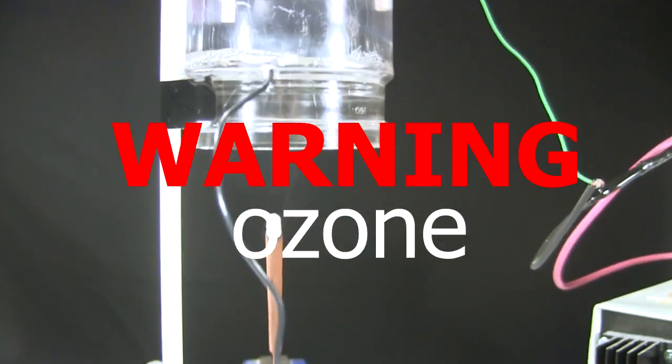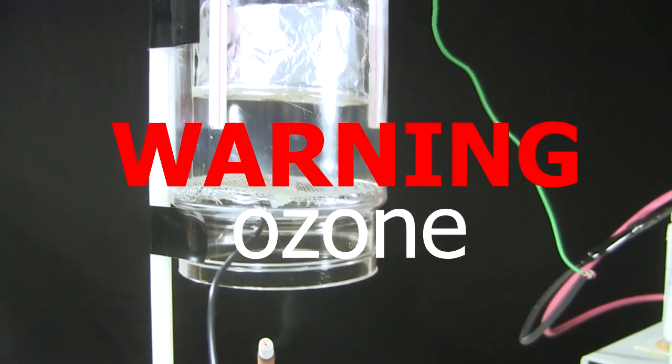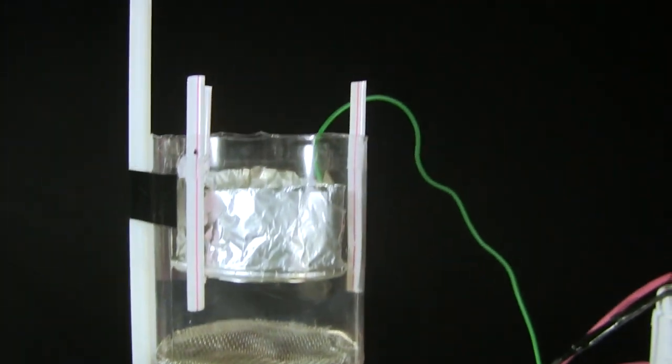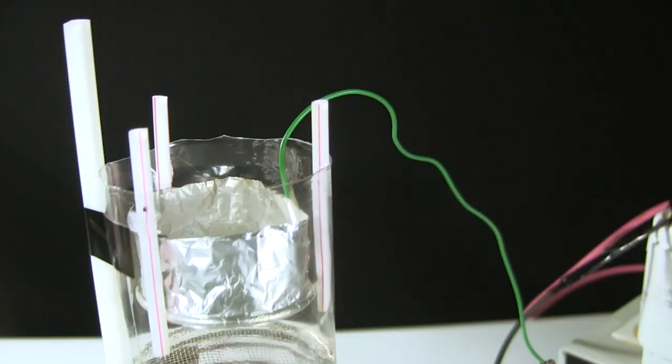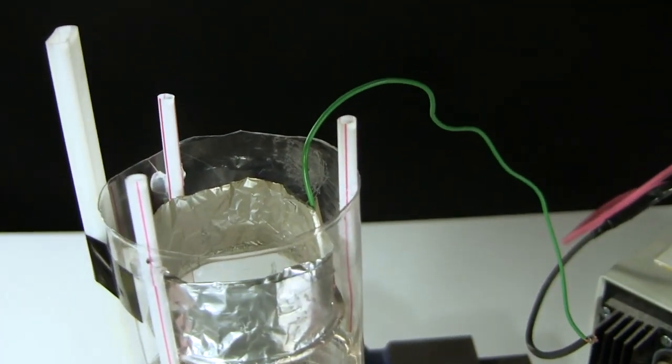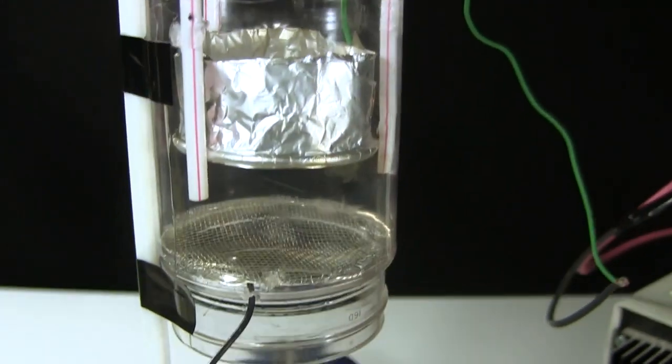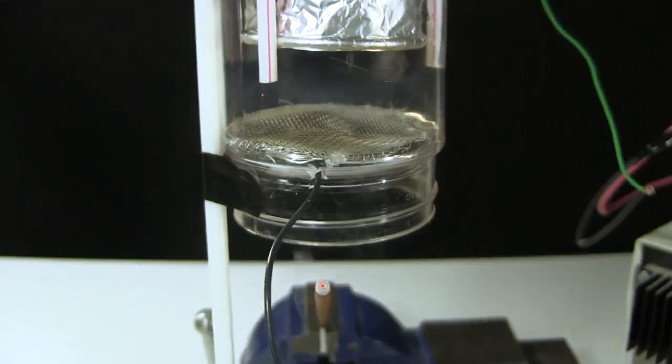And a word of warning. At these voltages ozone is being produced. Prolonged exposure to ozone is hazardous to your health. And so you should do this in a well ventilated room. Voltages somewhere below 10,000 volts don't produce ozone. But I don't know what that cut off point is.